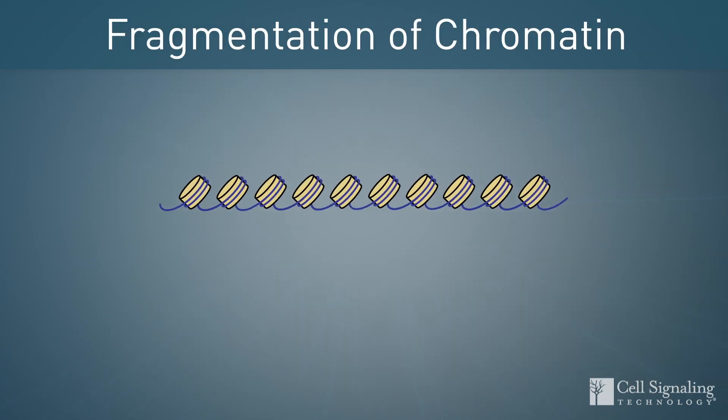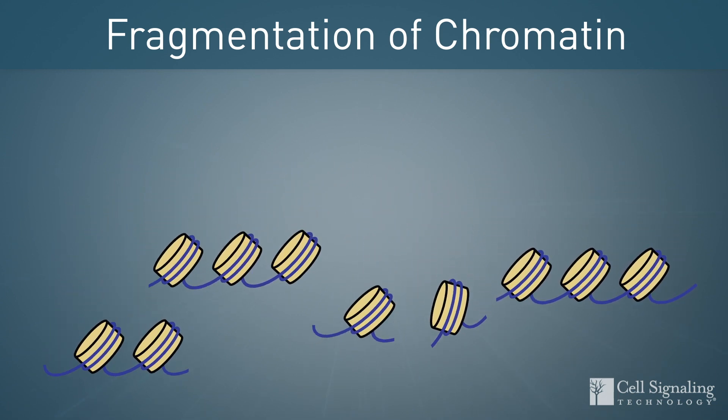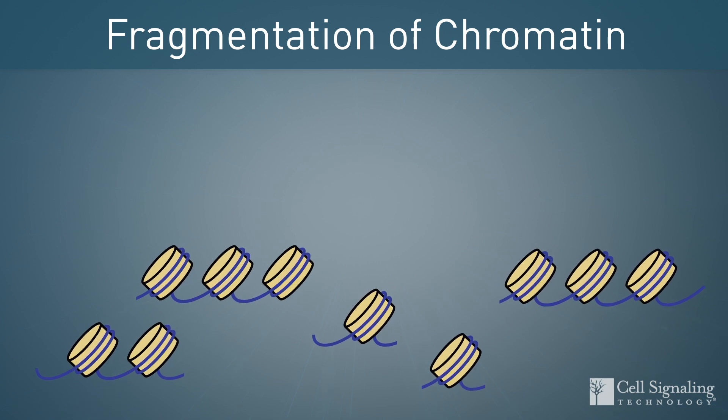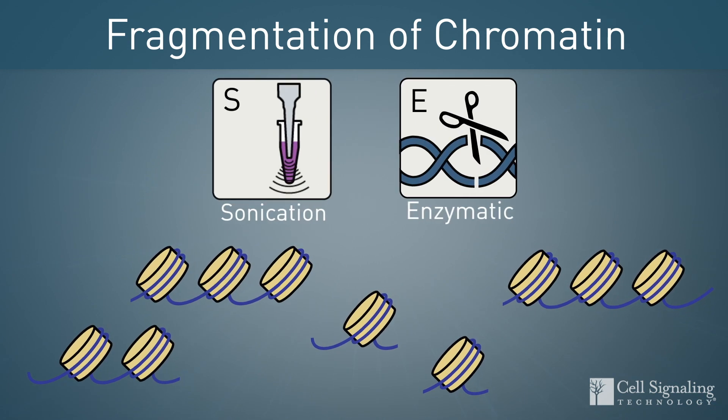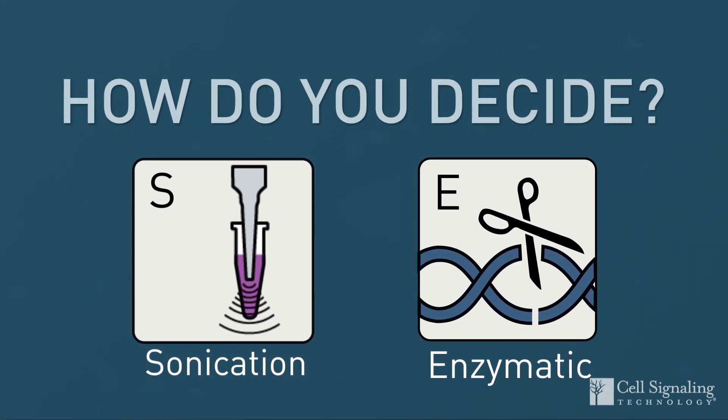The success of your ChIP experiment depends on the fragmentation of chromatin, a critical step in the ChIP protocol. This can be accomplished with either sonication or enzymatic digestion, but how do you decide which chromatin fragmentation protocol to use in your ChIP experiments?